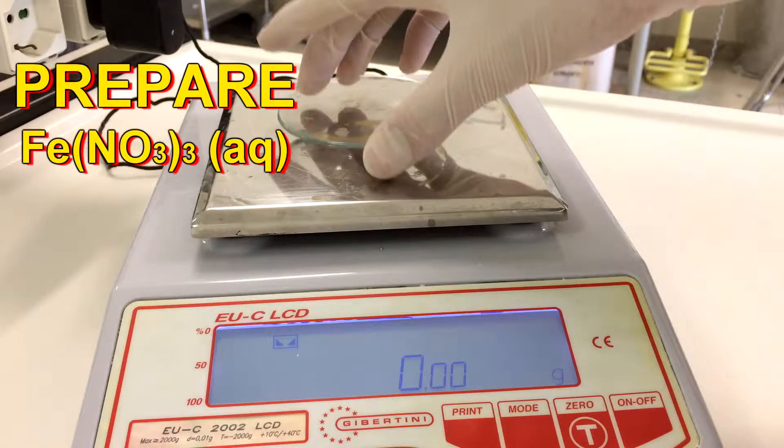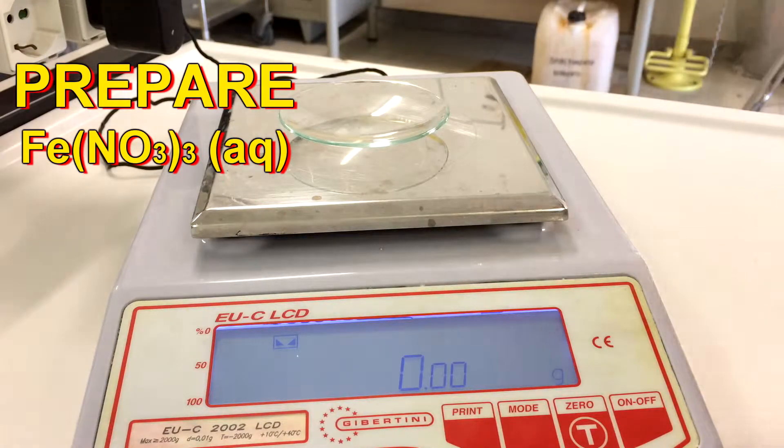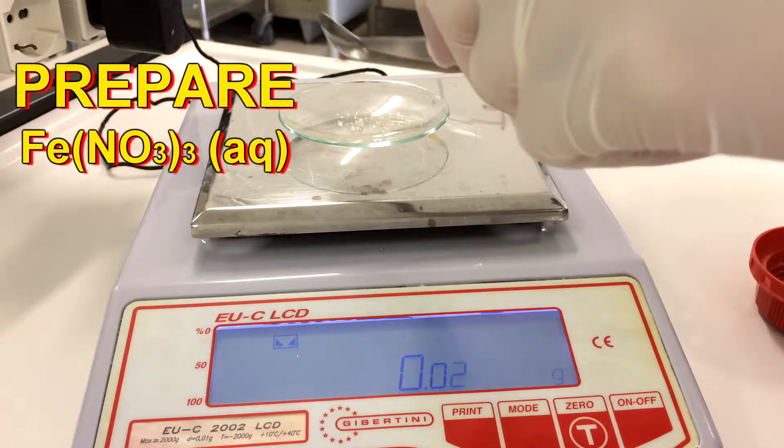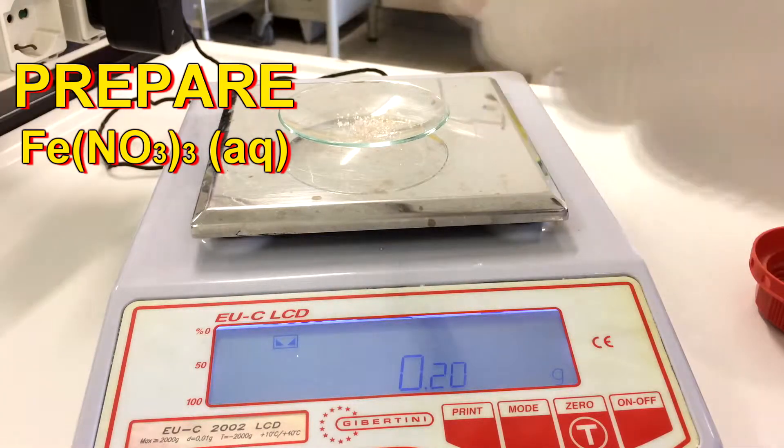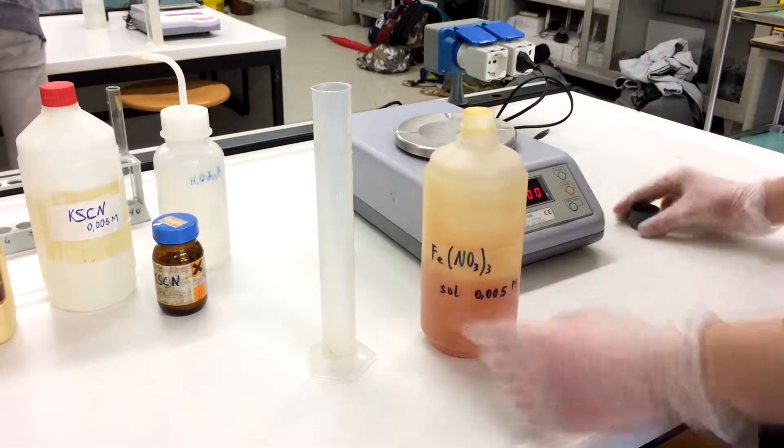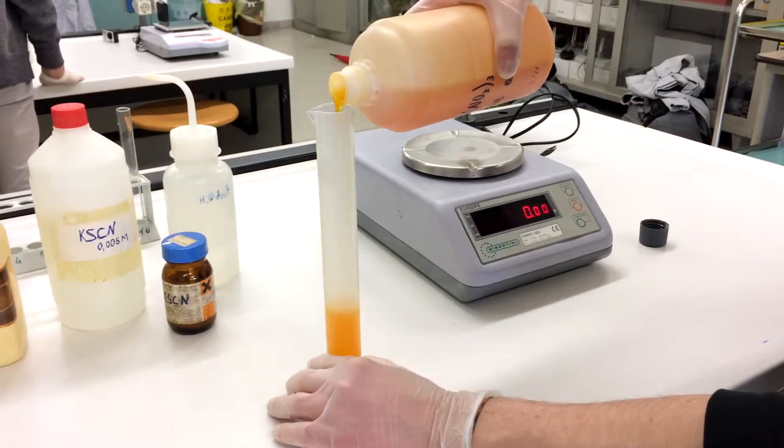We weigh 0.20 grams of ferric nitrate. Then we create the solution of 100 milliliters and pour 50 milliliters into the 100 milliliters graduated cylinder.